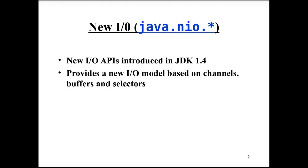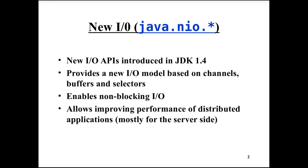Java NIO provides a completely new IO model based on channels, which connect to a source or drain for data; buffers, which contain data; and selectors, which are used to select which channel can perform IO without blocking. It improves performance, particularly on the server side, because it supports non-blocking IO and native operating system calls can be used.